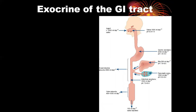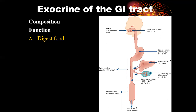The exocrine glands secrete secretions into the GIT. Their functions include digestion of food — the secretions contain enzymes involved in digestion — and diluting food into iso-osmotic fluids, which are the ones that will be absorbed because they won't have an effect on the osmolality of plasma.